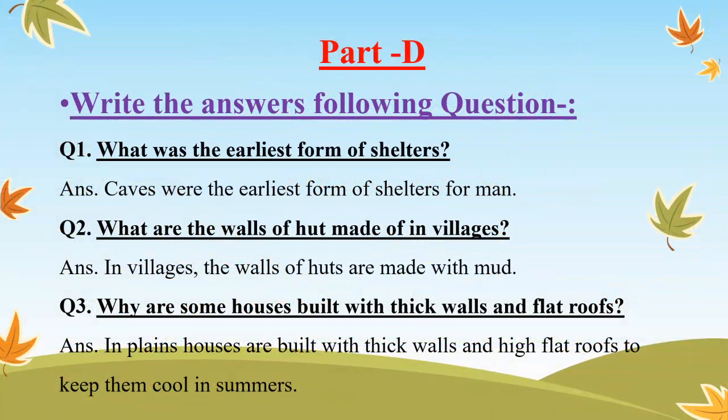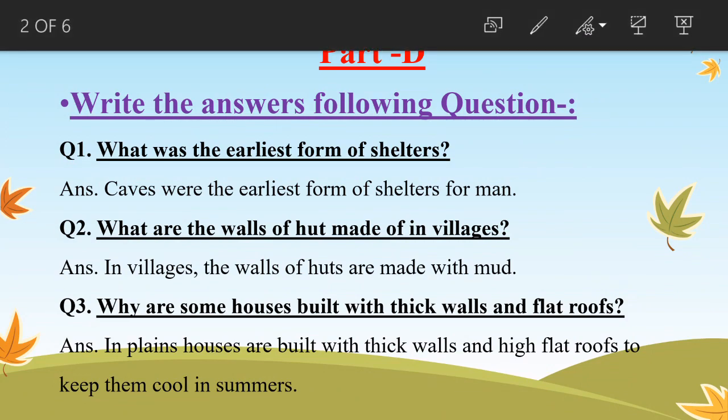Here are the questions of Part D. First question: What was the earliest form of shelter? Caves were the earliest form of shelters for men.